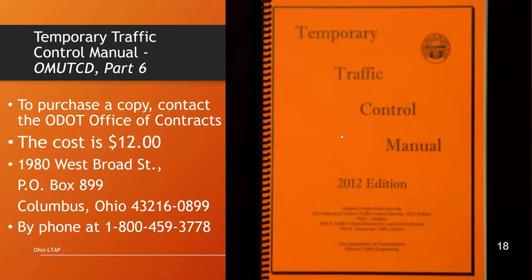This is what the Temporary Traffic Control Manual looks like in physical copy, but they're not publishing it anymore, so you need to find it online. I'll be showing you how to find this manual online — there are several different places you can go on the ODOT website, including the Ohio LTAP website, to quickly find this manual and view it for free or download it.